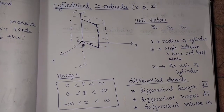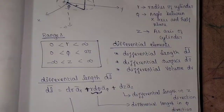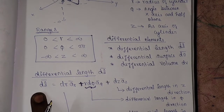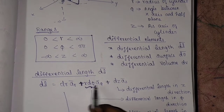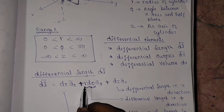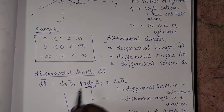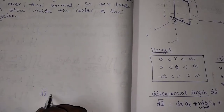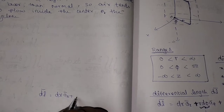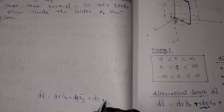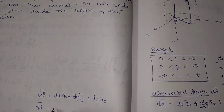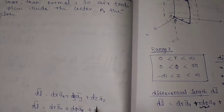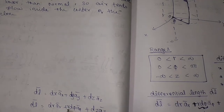Now we are going to go in depth about differential length, differential surface, and differential volume. The differential length DL vector is equal to DR·AR vector plus R·dφ·Aphi vector plus DZ·AZ vector. In Cartesian coordinates, DL vector is DX·AX plus DY·AY plus DZ·AZ. But in cylindrical coordinates, the unit vectors are AR, Aphi, and AZ, giving DR·AR, R·dφ·Aphi, and DZ·AZ.